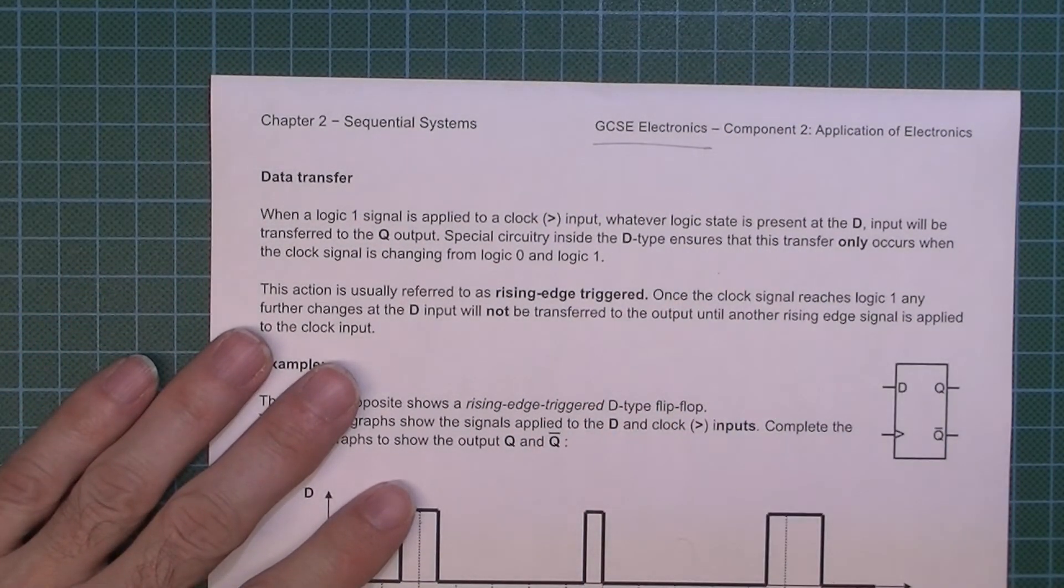Okay, this video is for my GCSE electronics students, and we are learning about the D-type flip-flop. This is one of the first examples in the booklet that you've got, and the D-type flip-flop has an input.